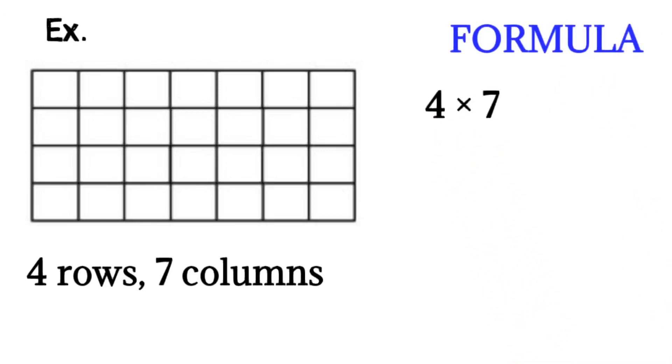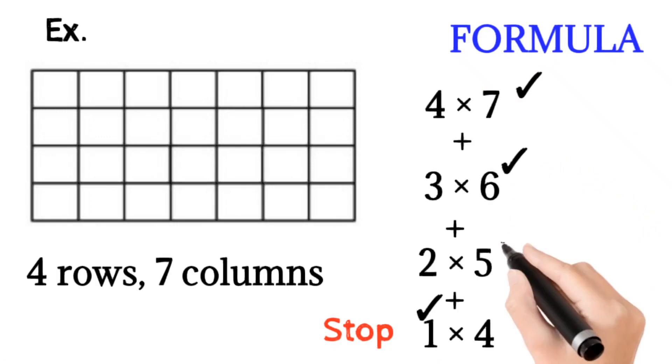4 into 7, plus decrement each number: 3 into 6, plus again 2 into 5, next decrement 1 into 4. So decrement 4, 3, 2, 1, and 7, 6, 5, 4. Now we have 1 here, so you have to stop decrementing.